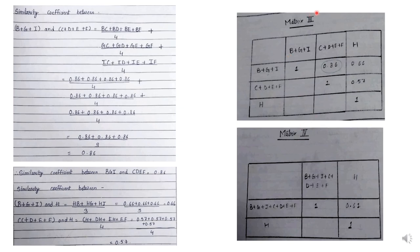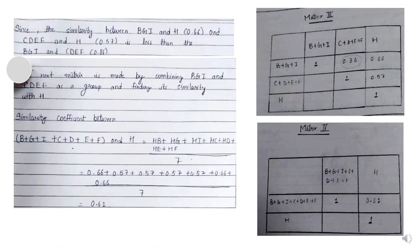Now we make matrix 4 by taking B, G, I and C, D, E, F as one cluster, then calculating its similarity index with H. We divide by 7 because H is compared with 7 cultivars: B, G, I, C, D, E, F. The arithmetic mean comes to 0.61, so we put 0.61 in matrix 4. From this we have completed matrix 4.